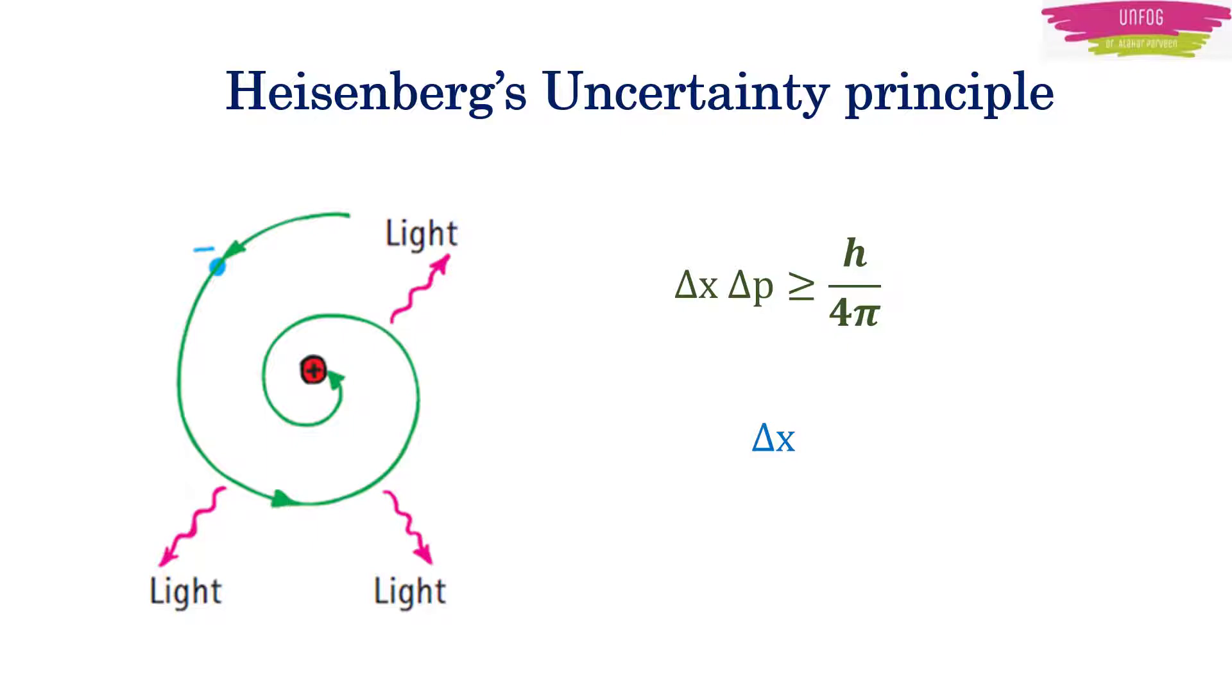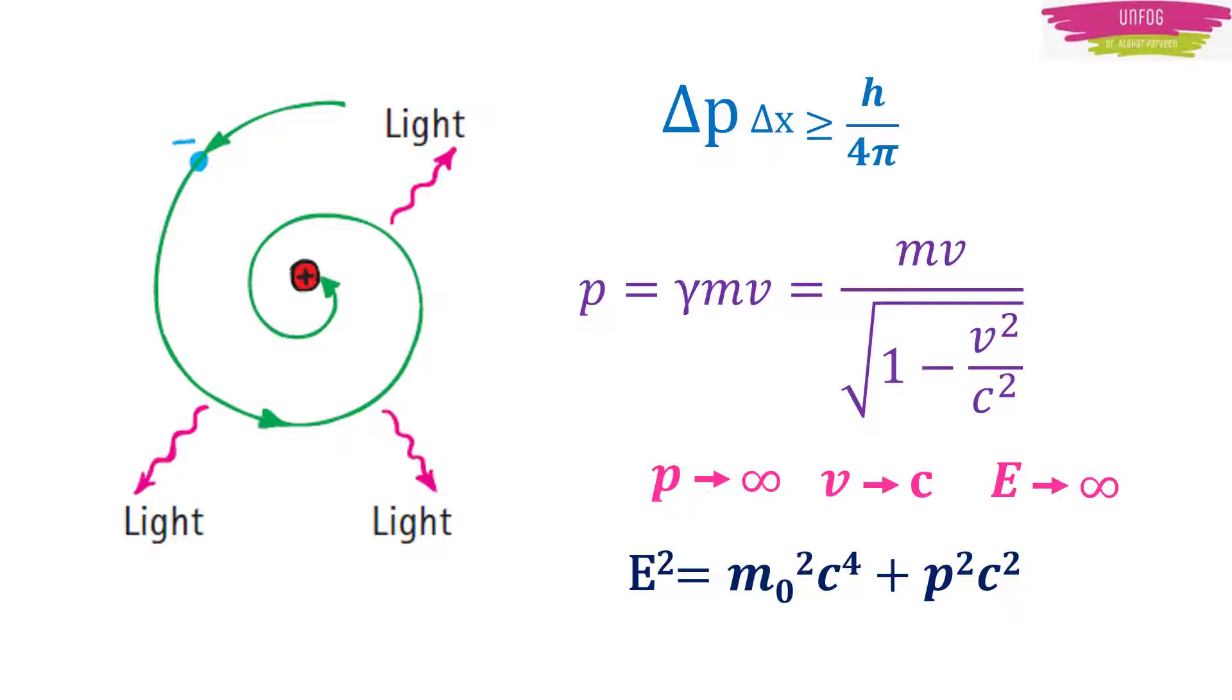Then according to Heisenberg's uncertainty principle, its momentum should be infinite at that instance. But if the momentum of a particle reaches to infinity, then its velocity will be again equal to speed of light. And this will also lead in infinite energy which is not possible.